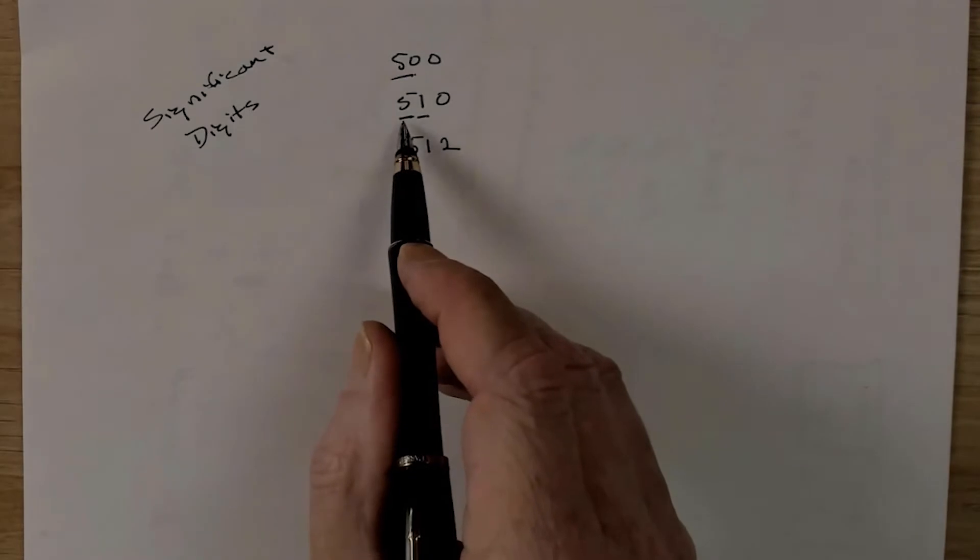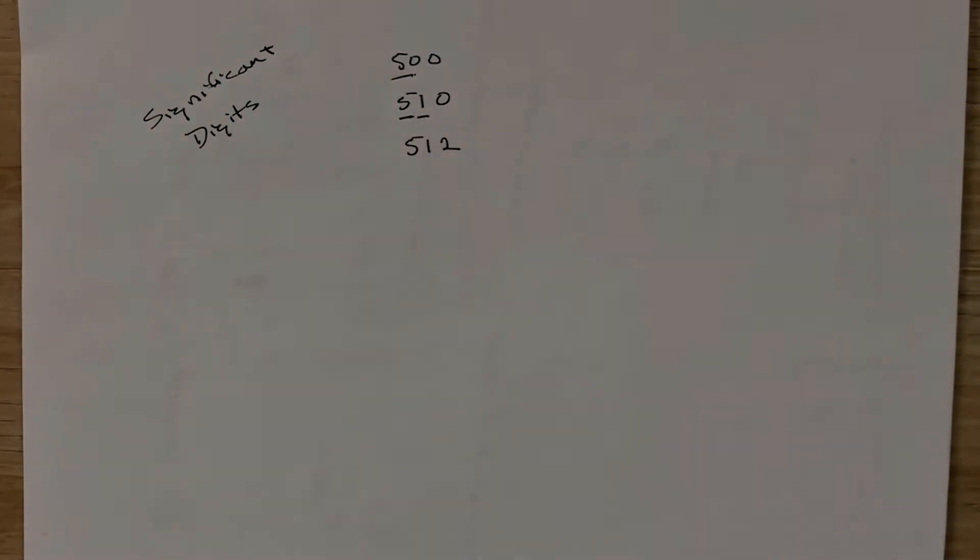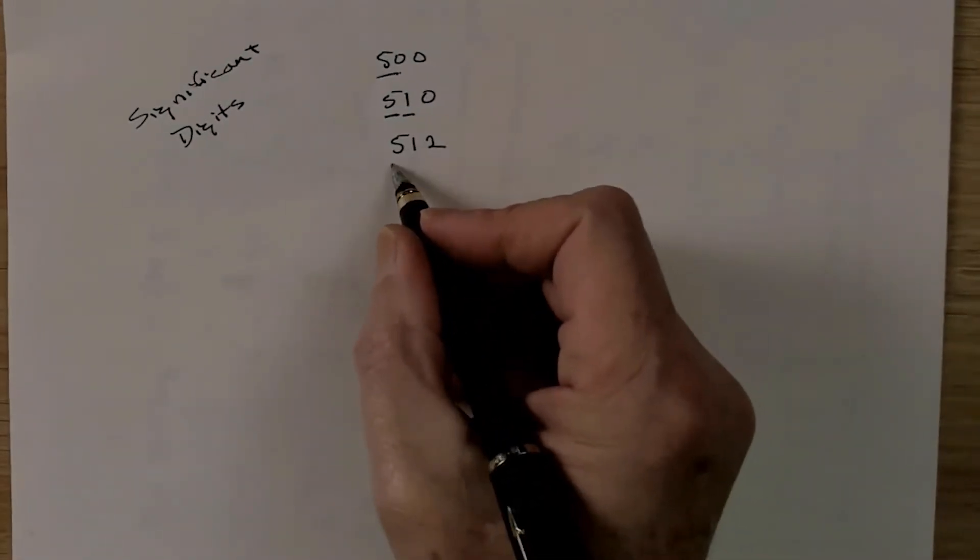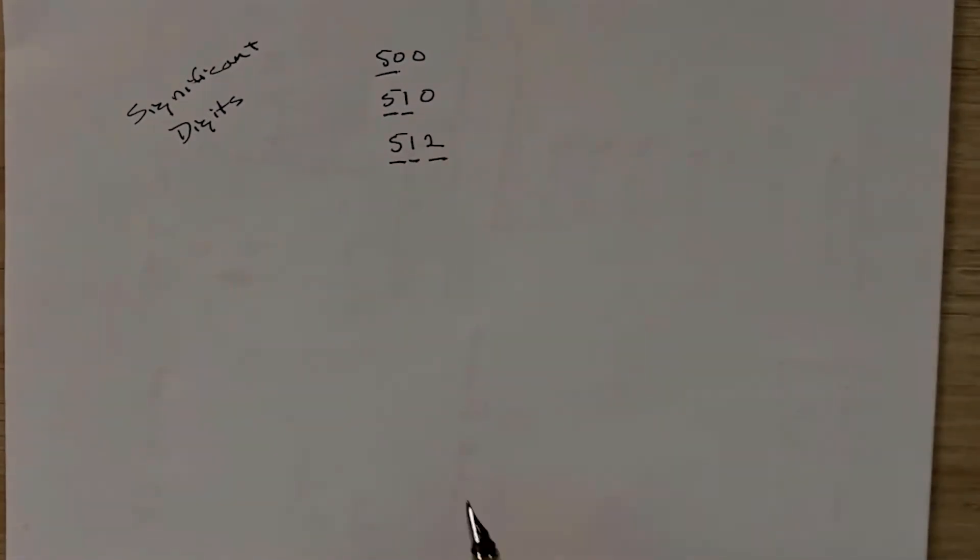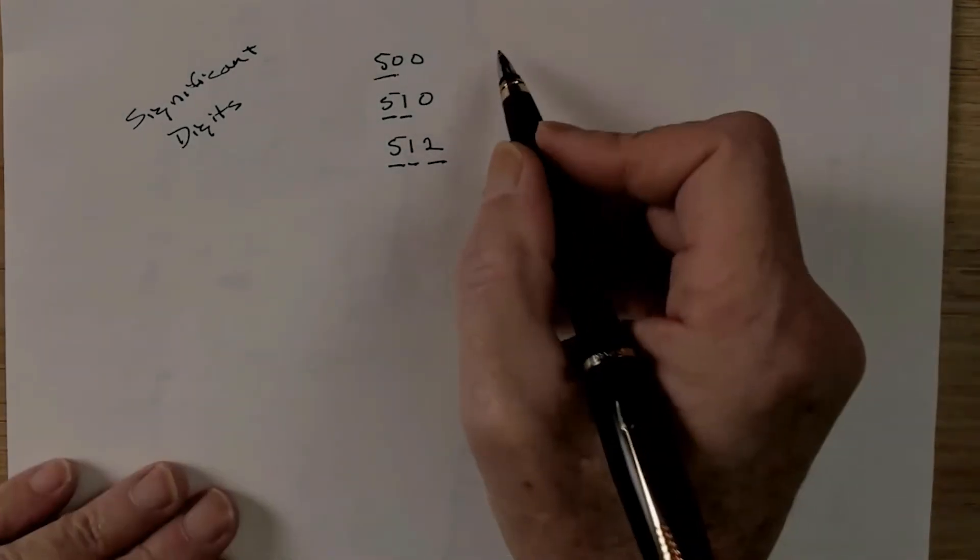and we find that it's 510 units long. That's two significant digits, one, two. And then we use a micrometer, and we get a really precise measurement, and we find out that it's actually 512. That would be three significant digits.